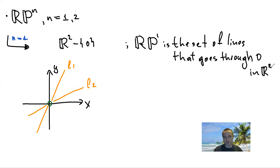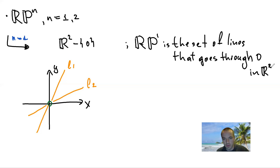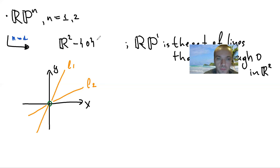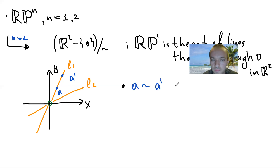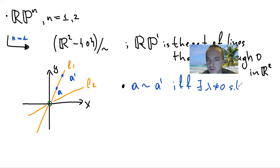That's the more geometric definition — real projective space is just a set of lines. But there's another approach: we take R² without the origin and consider equivalence classes of points. Two points a and a′ are equivalent if and only if there exists some non-zero constant lambda such that a equals lambda times a′.